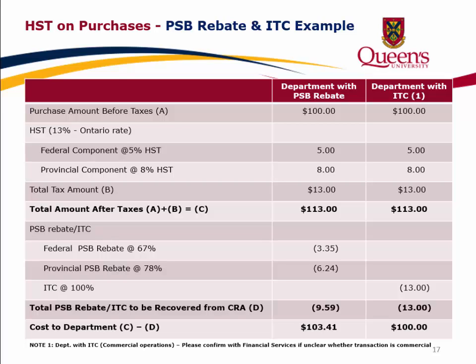Column 2 shows a department with ITC for commercial operations, where the purchase amount before taxes is $100. The HST is broken into the federal component at 5% ($5) and the provincial component at 8% ($8), for a total tax of $13 and a total after taxes of $113. The ITC at 100% is a $13 credit, and the total ITC to be recovered from CRA is the entire $13. Cost to the department is $100.